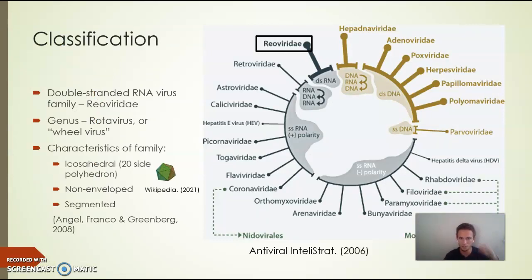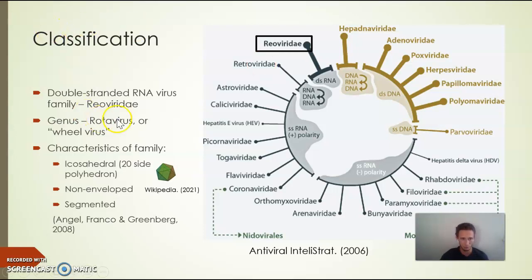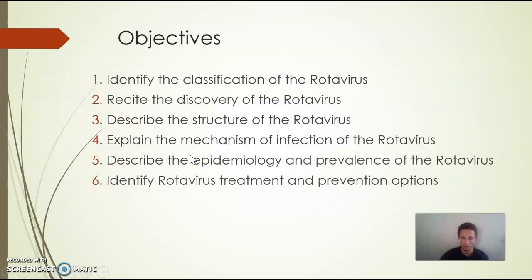This is a double-stranded RNA virus, and that is a characteristic of this family Reoviridae. We're over here with double-stranded RNA. When we're talking about dsRNA, it's two strands of RNA—normally we think of RNA as single-stranded, but this actually has a complement to it, so it will be kind of packed and similar to what our DNA looks like but with RNA molecules. The genus rotavirus was named after a wheel—rota, like rotors or rotation. It kind of looks like a wheel under an electron microscope.